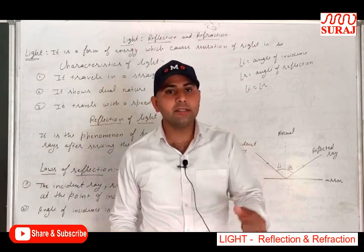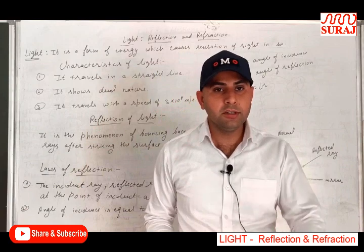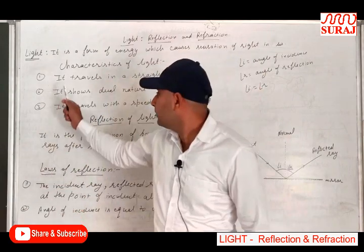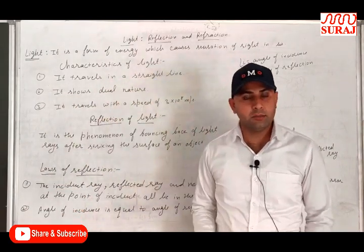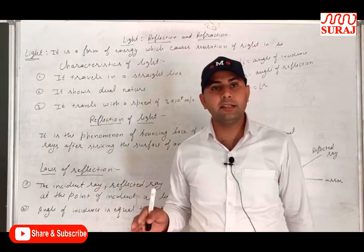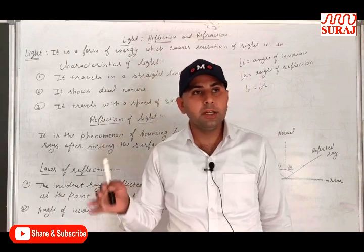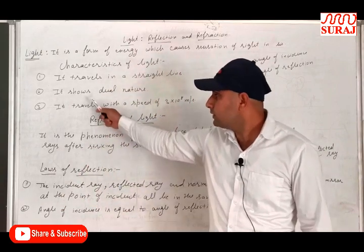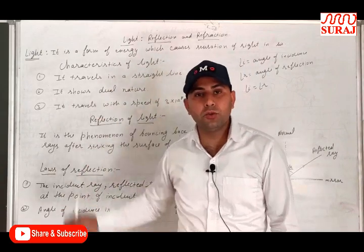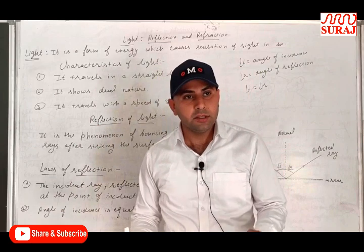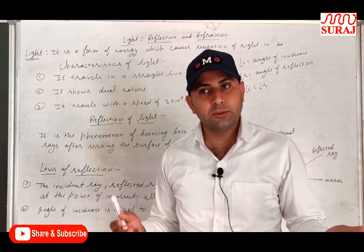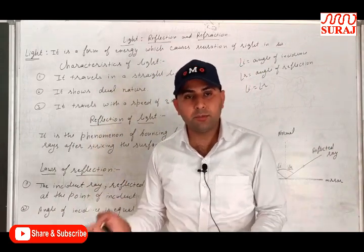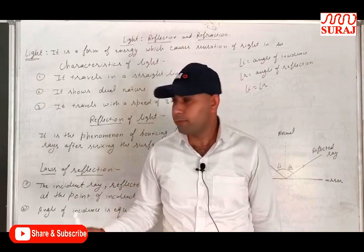There are some characteristics of light. First is that it travels in a straight line — light propagates in a straight line path. Next, it shows dual nature, meaning it has particle nature as well as wave nature. It behaves as a particle as well as a wave.